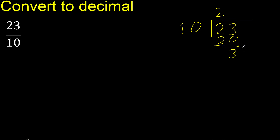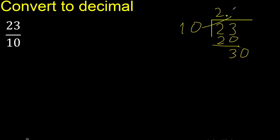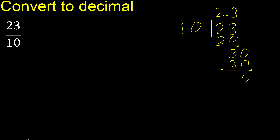There is no number that goes down, therefore complete with 0 and add a decimal point. Then multiply by which number is nearest to 30 but not greater? Multiply by 3 is exactly 30, subtract 0. Therefore, finish.